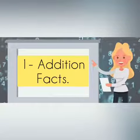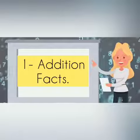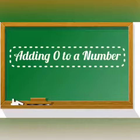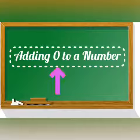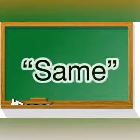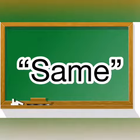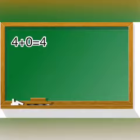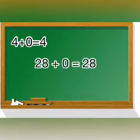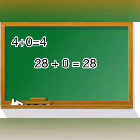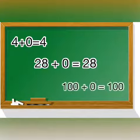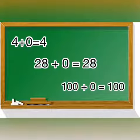First is addition facts. In this there are three kinds of facts like adding zero to a number. When we add zero to a number we get the same number like 4 plus 0 equals 4, 28 plus 0 equals 28, and 100 plus 0 equals 100.